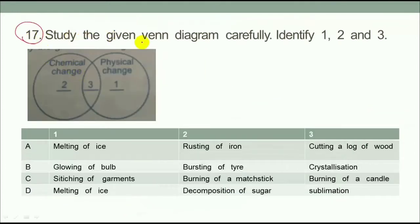This is Question 17. Study the given Venn diagram carefully. Identify 1, 2, and 3. First, what is showing you here? First, you should have a physical change. Second, you should have a chemical change. Third, you should have a physical change and chemical change. So let's try to do this question.